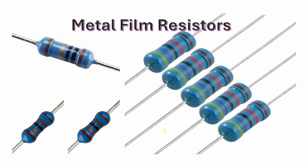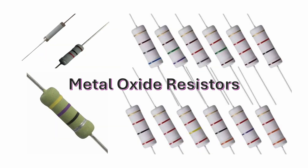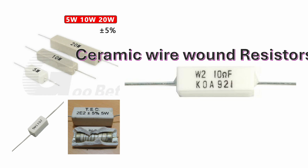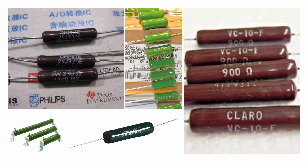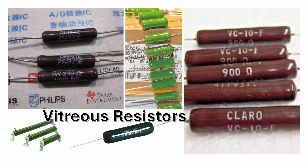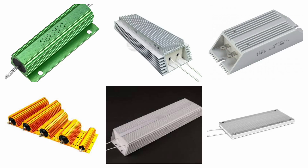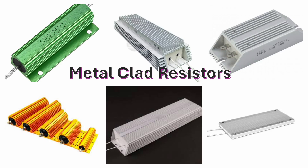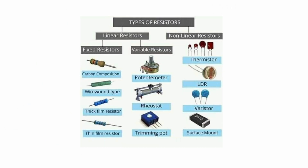This is a metal film resistor — it has the same function and the same way to identify its value. This is a metal oxide resistor, and then there are also ceramic wire-wound resistors, vitreous resistors, and metal clad resistors. Here is a brief explanation of the types of resistors.